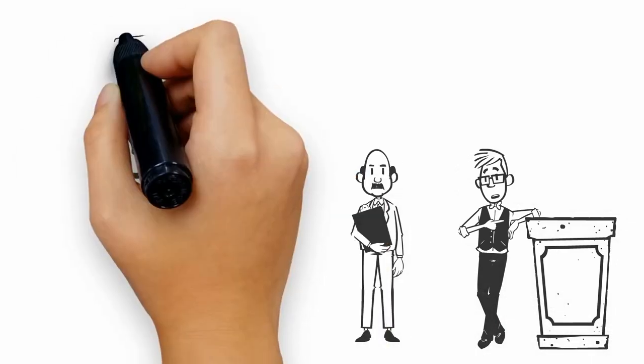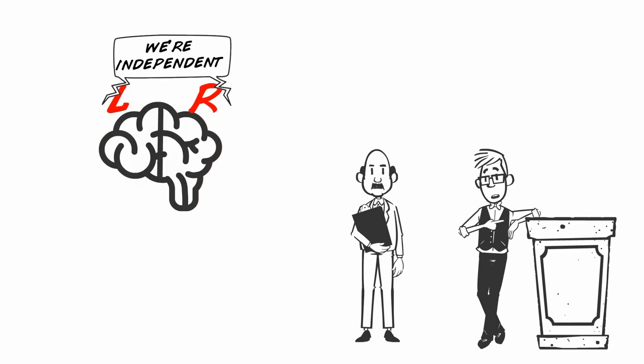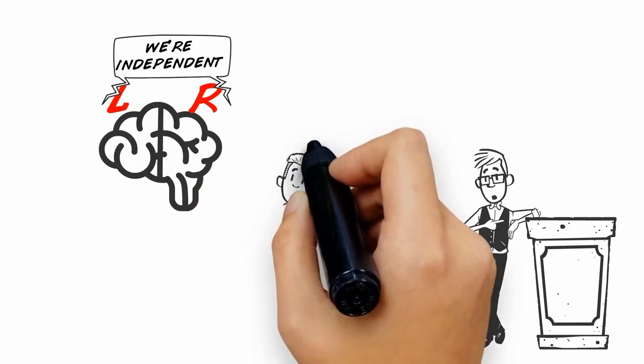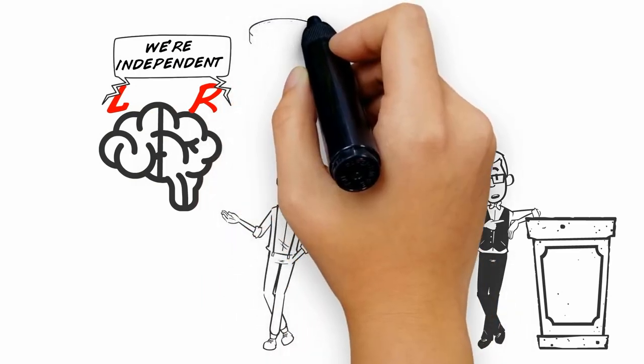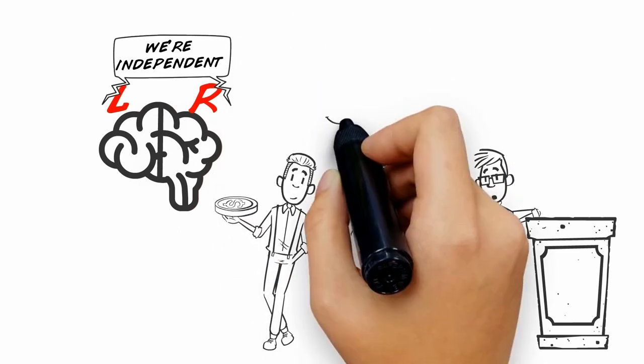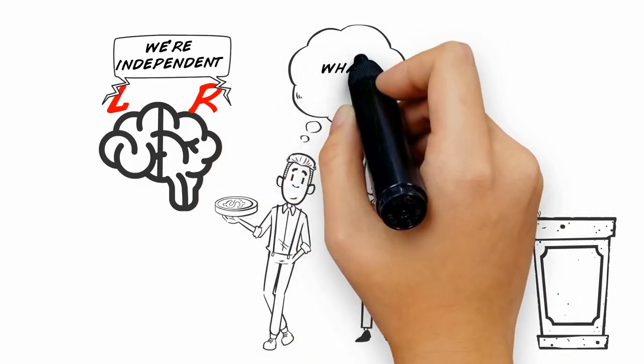Sperry discovered that these two sides of the brain acted like independent entities. If they put a quarter in the hand of one of these patients, the patient could determine it was a quarter with the right side of the brain, the so-called artistic side.